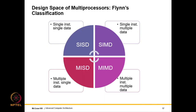Next we discuss the design space of multiprocessors — Flynn's classification. Starting with a conventional uniprocessor, which is a single core, it is called SISD — Single Instruction, Single Data — where a single program supplies instructions and a single memory supplies data. Then we have SIMD — Single Instruction, Multiple Data — which was used in vector processors.